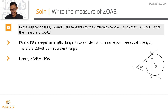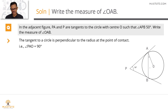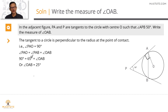Summary: We identified triangle PAB as isosceles and used the angle sum to find angle PAB = 65°. Then using the tangent-radius property (angle PAO = 90°), and since PAO = PAB + OAB, we get angle OAB = 90° − 65° = 25°.